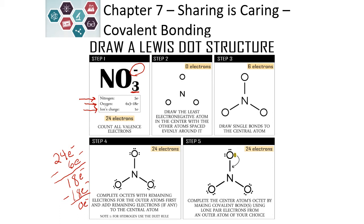We now look to see that all of our elements have a total of 8 electrons. Our outside oxygens all have 8 electrons — 6 in the lone pairs and 2 in the bonds. But our nitrogen only has 3 bonds for a total of 6 electrons. In order to complete nitrogen's octet, we need to share a lone pair of electrons and form a double bond. Our structure has 2 oxygens with 3 lone pairs and 1 oxygen with 2 lone pairs and a double bond, so every element has 8 electrons around it.